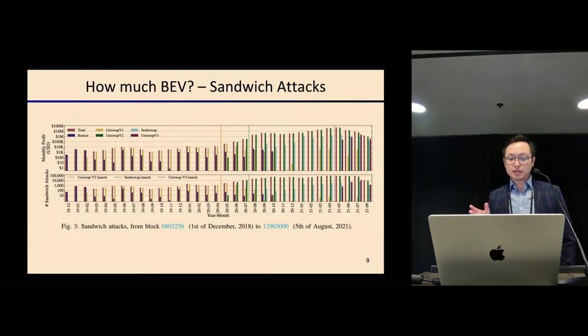Here is how much was extracted from sandwich attacks. On the x-axis, I have the time frame, the 32-month period measured. On the y-axis, we have the monthly profit and the number of sandwich attacks we observed on-chain. We can see the profit increased from just a few hundred dollars to almost 100 million over the past 32 months. That's several magnitudes bigger compared to a few years ago.